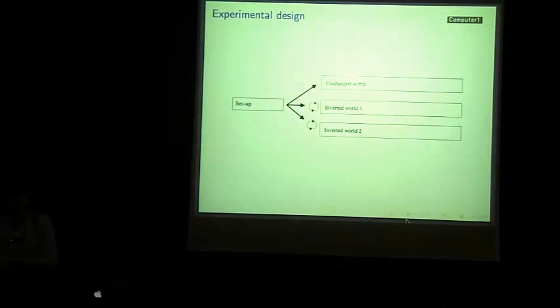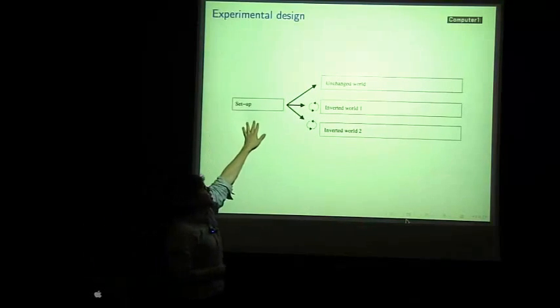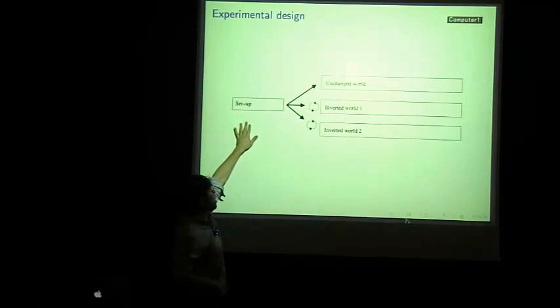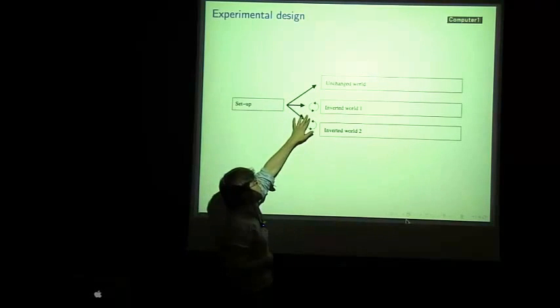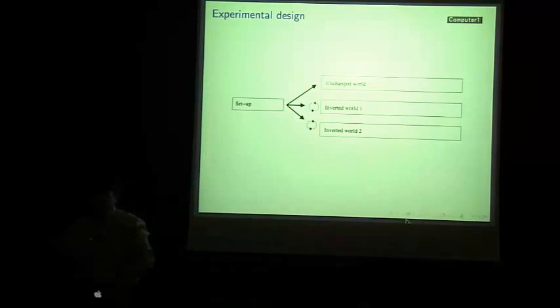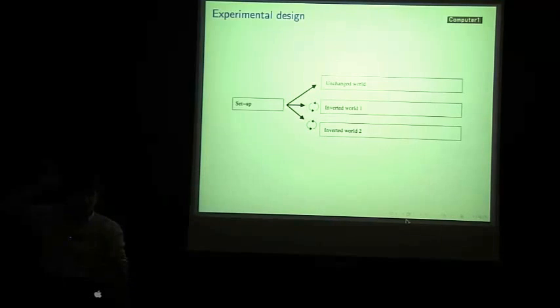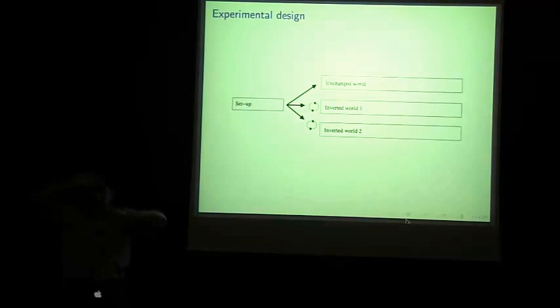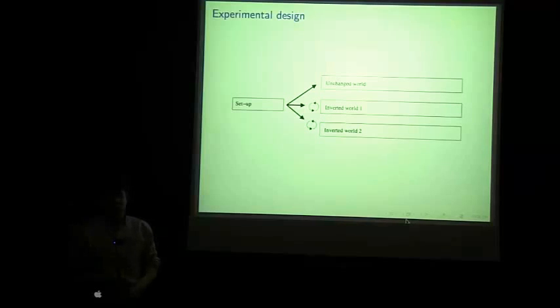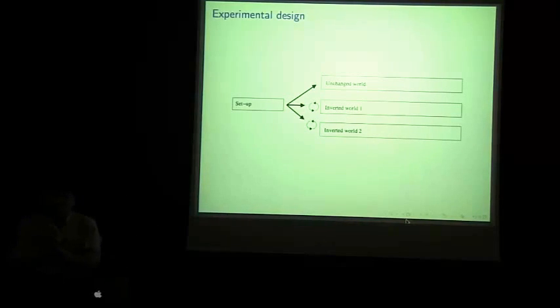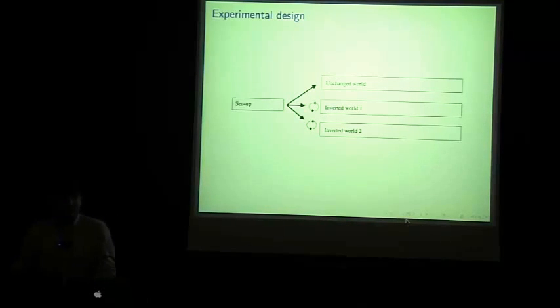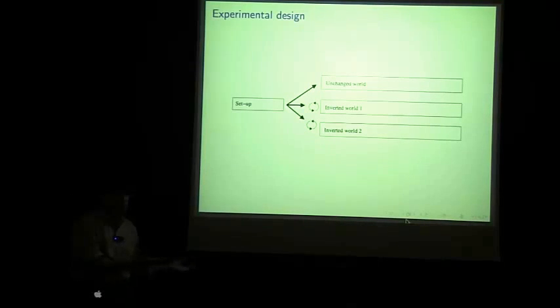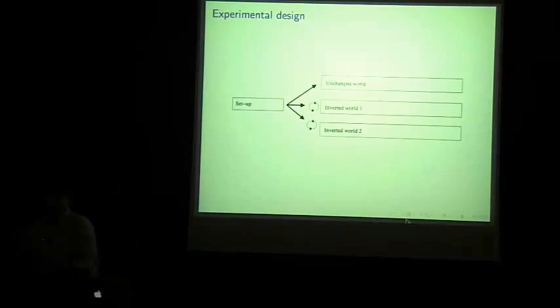So, the design we used is as follows. We allowed the popularity of the songs in one of the social influence worlds to run for a while until it had reached something like an equilibrium. Then we took this world and we made three copies. And in one world, we left that unchanged. In the other two worlds, we inverted the popularity. We told people the least popular song was the most popular, the second least was the second most, and so on. And then the question is, if you have this system that's basically at equilibrium and you give it a big shock, what's going to happen? Is it going to return to its original configuration, is it going to move to a new configuration, and so on.